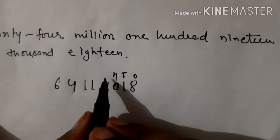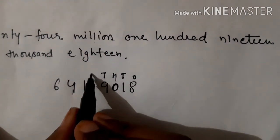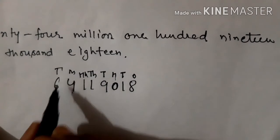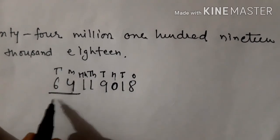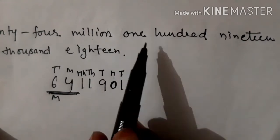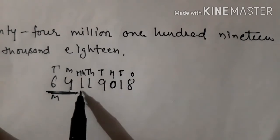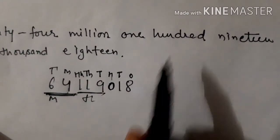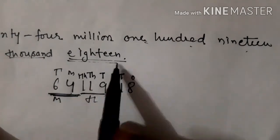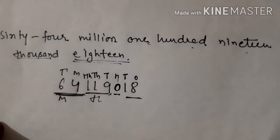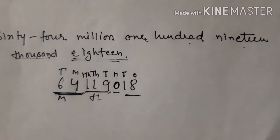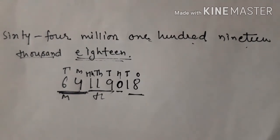So: Thousands, Ten Thousands, Hundred Thousands, Million, Ten Million — 64 million is written as 64. One hundred nineteen thousand is 119. Then 18 — since nothing is in the hundreds place, we put zero. The final figure is 64,119,018. आपकी exercise finish हो गई है। Okay, thank you very much!